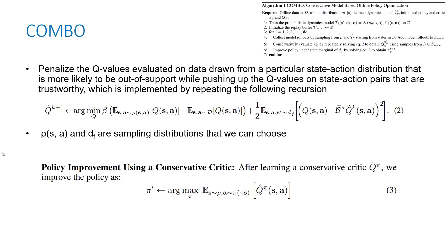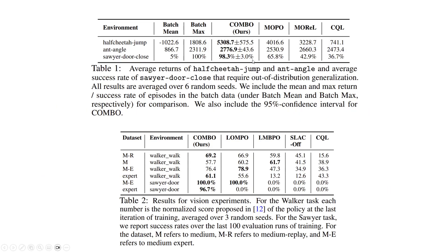Looking at COMBO's results: it's significantly better than CQL. For physical systems like half-cheetah, jumper, door close, and walker, COMBO outperforms. Other model-based alternatives also outperform CQL, but COMBO does better because it uses regularization instead of uncertainty estimation, which is more effective. The author notes that more expert data leads to better performance.